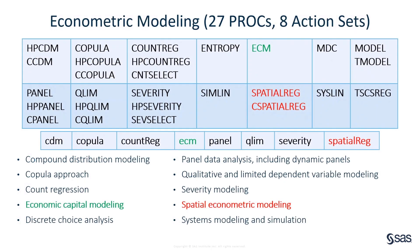There are 27 procedures and 8 action sets that you can use for Econometric Modeling. You can model many types of data, such as category, censored, count, cross-sectional, panel, spatial, and so on. You can also model compound distribution, dependency between distributions, and economic capital.